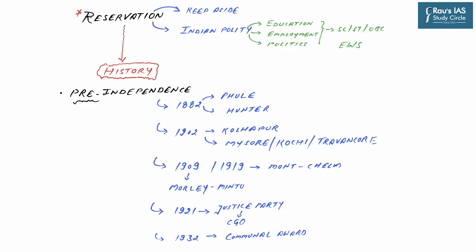First, let us look into the term reservation. By simple meaning, it is an arrangement where certain specified space is kept aside for an individual or group. In the context of Indian polity, it is the government policy backed by constitutional provisions for affirmative action or positive discrimination, reserving access to seats for historically disadvantaged groups in education, employment and politics. The groups covered are Scheduled Castes, Scheduled Tribes, Other Backward Castes and recently EWS.